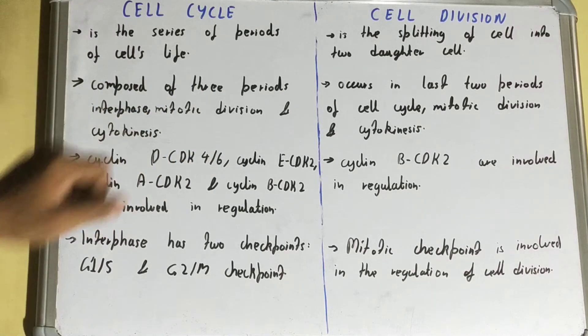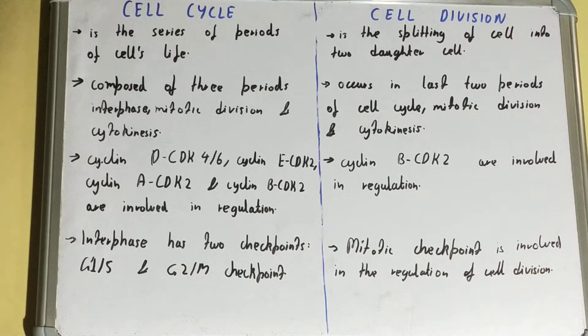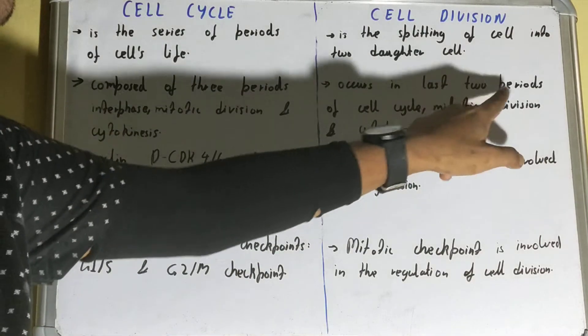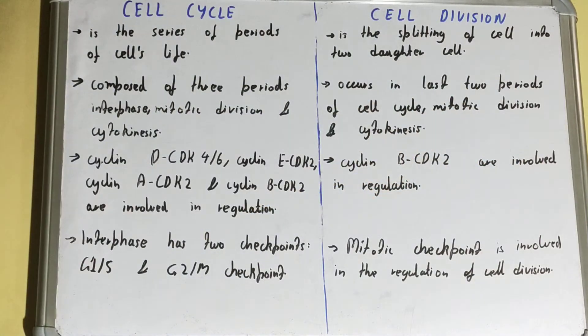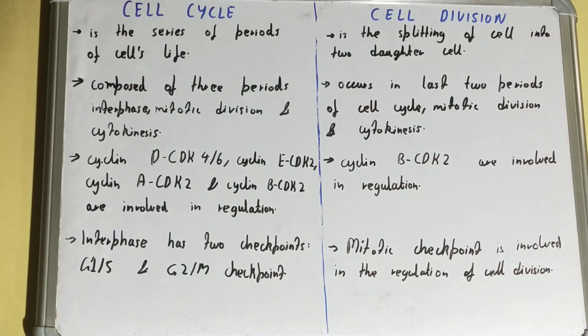Whereas if we talk about cell division, it occurs in the last two stages of the cell cycle — that is mitotic division and cytokinesis.